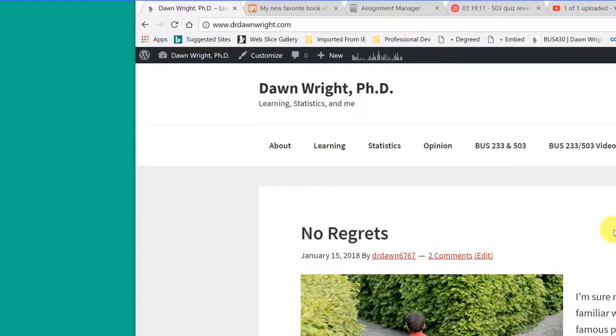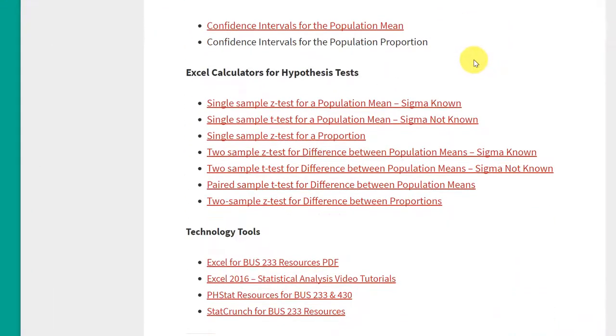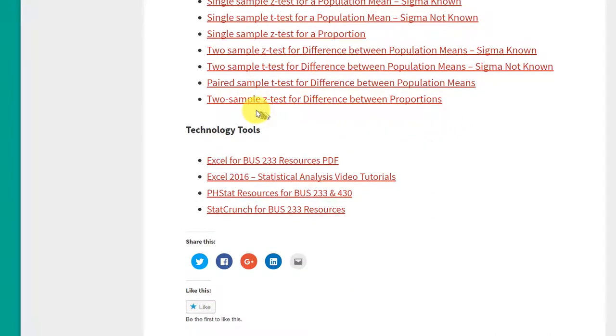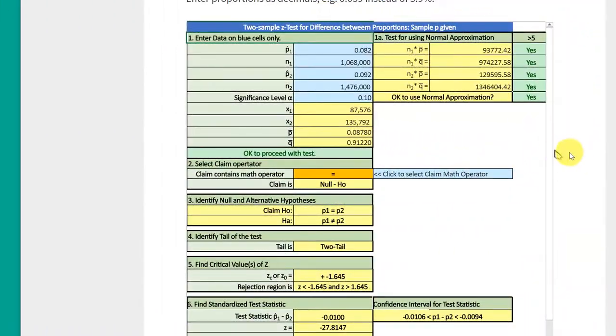To solve this problem using Excel, you can use the calculator I have on my website. Just go to drdonwright.com, when you get there let's go to Business 233 and 503 and we scroll down. I haven't added in a specific calculator yet for the proportion, but I'll show you something. Go down to the bottom here, we have a two sample z test for the difference between proportions, and that's what we have in this particular problem. So I'm going to click on that.